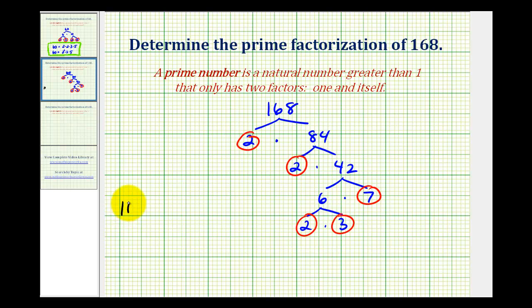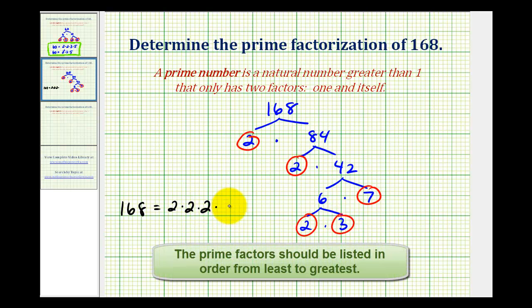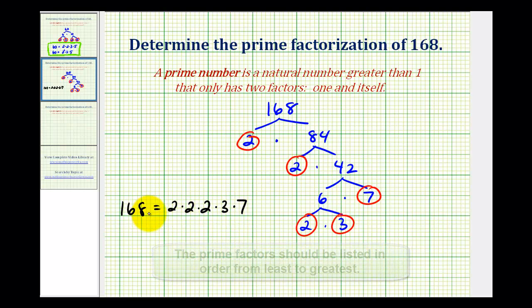So 168 is equal to three factors of two, one factor of three, and one factor of seven. And it's always a good idea to check this to make sure this product is 168. And that's why I prefer to circle the prime factors, because otherwise, it might be easy to forget one of these prime factors.